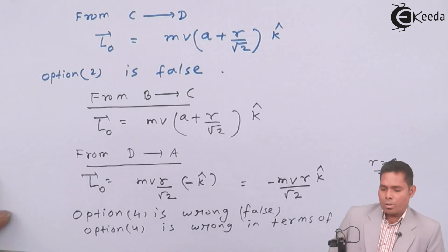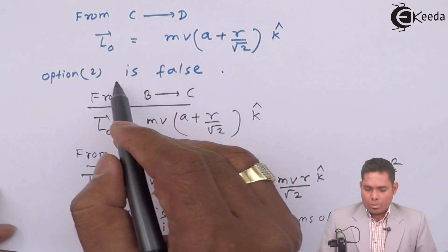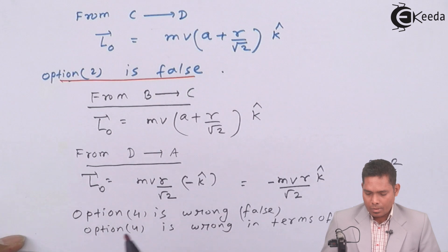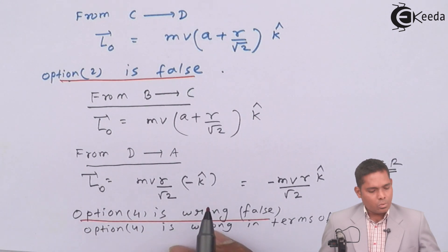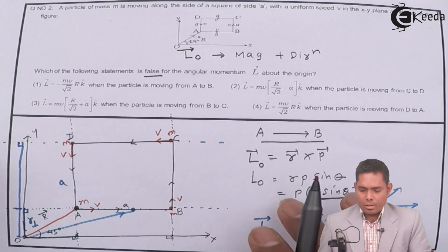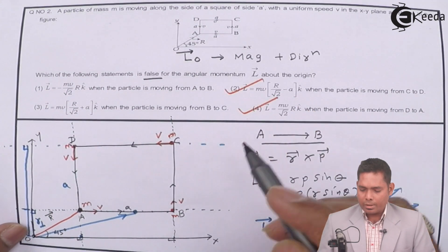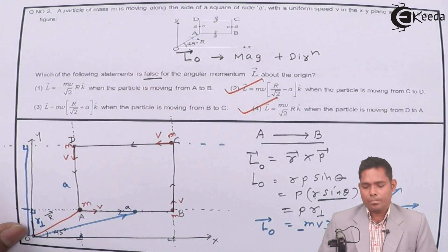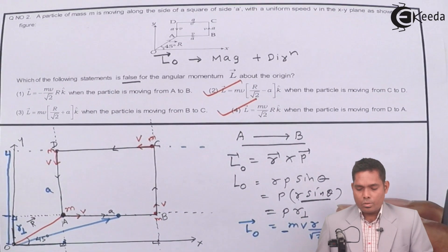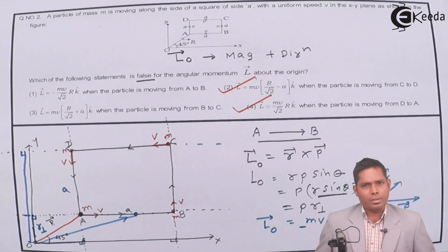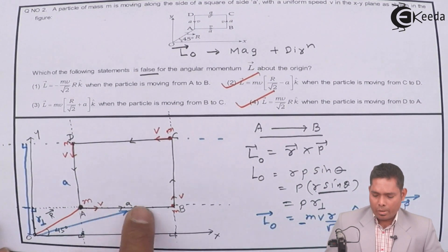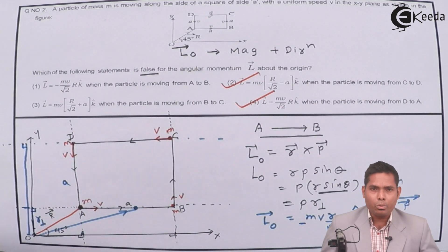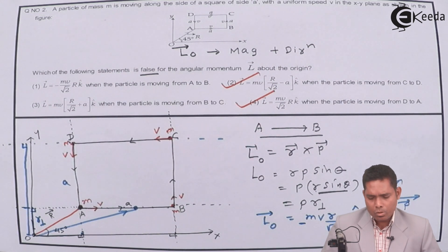So our final answer is that option 2 and option 4 are both false. The method to use is: find the momentum line, drop a perpendicular from the point about which you want to find the angular momentum, multiply that perpendicular distance by mv to get the magnitude, and use the right-hand rule with r cross p to find the direction.